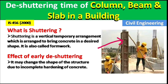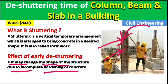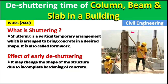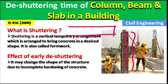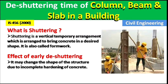Effect of early de-shuttering: if we remove this shuttering earlier, it may change the shape of the structure due to incomplete hardening of the concrete. The original shape will buckle — for example, it will not remain straight. If we are constructing a beam, the beam may hog. So we should not remove the shuttering too early.